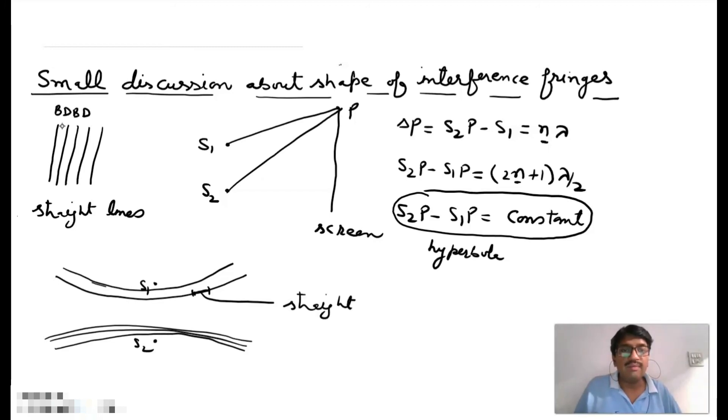and that's why when we see the shapes of fringes we can see only the straight lines in the form of bright and dark fringes. This is the explanation of why we see the straight lines however the shapes of fringes are hyperbolic. Thank you.